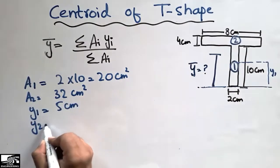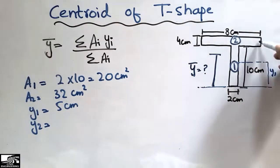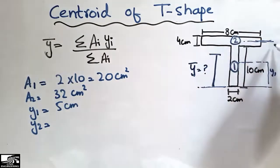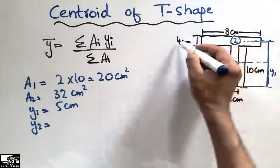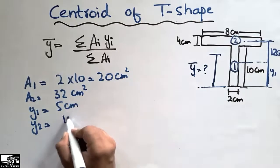Y2 is the summation of 10 and 2, up to this point, plus the centroid of this object's center. So 10 plus 4 divided by 2, it comes out to be 12 centimeter.